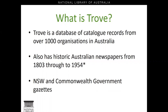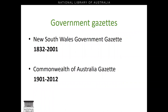Trove is what's called a federated search engine. It brings together over 1,000 catalogue records from libraries, archives and museums big and small, and makes their collections searchable through one easy portal. The best thing about Trove is that it's free. For family historians, Trove is probably best known for its collection of digitised newspapers, which begin in 1803 with the Sydney Gazette and New South Wales Advertiser. Coverage of most newspaper titles runs through to about 1954, with some later issues — such as the Canberra Times, which goes all the way up to 1995 — made available with publisher permission.